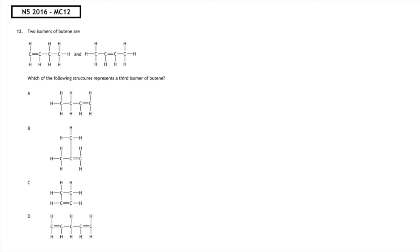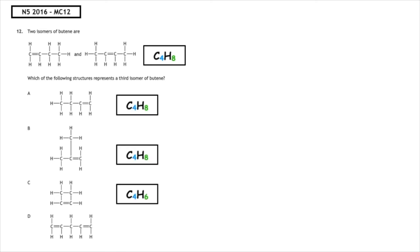This past paper question is from National 5, 2016, multiple choice 12. Two isomers of butene are given — which of the following structures represents the third isomer of butene? An isomer has the same molecular formula but a different structural formula. The molecular formula for butene is C4H8. Going through options A, B, C, and D and writing the molecular formula, we can see that C and D do not have the same number of carbons and hydrogens, so cannot be isomers. Option A is the exact same as the first structure given for butene, just flipped 180 degrees. That means the correct answer is multiple choice B.